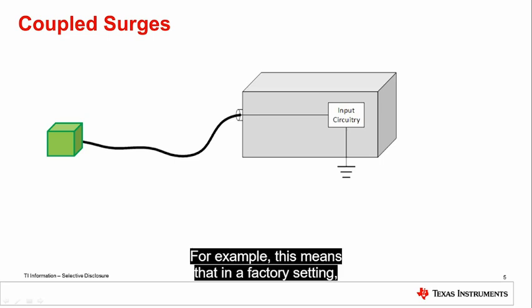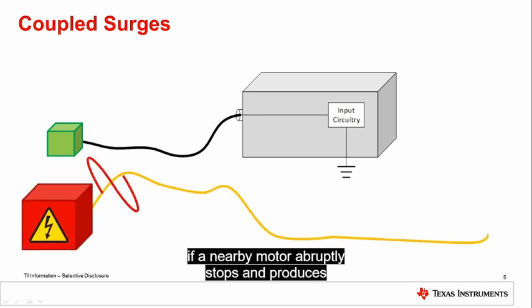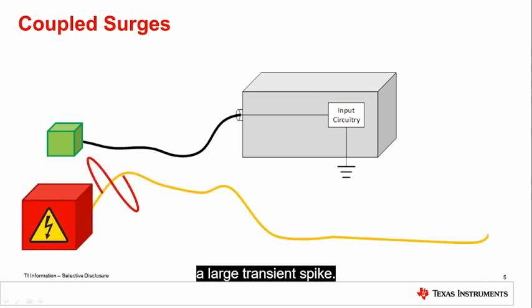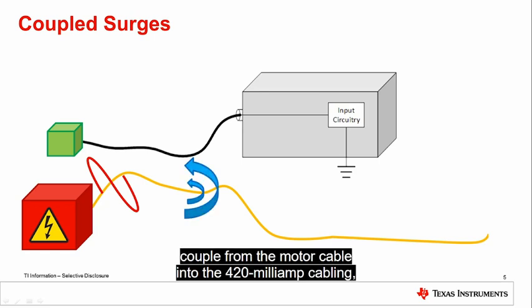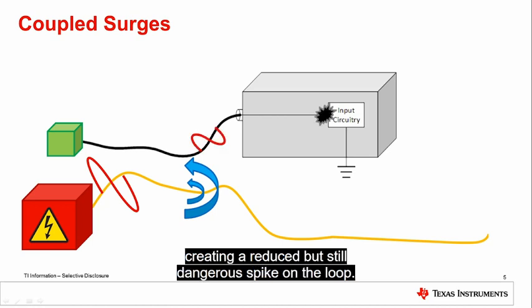For example, this means that in a factory setting, even a low voltage and current 420mA loop can see major transient voltage or current spikes if a nearby motor abruptly stops and produces a large transient spike. This transient spike can inductively couple from the motor cable into the 420mA cabling, creating a reduced but still dangerous spike on the loop.